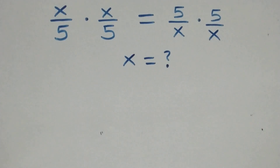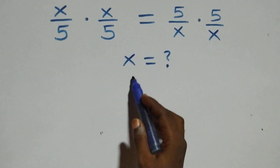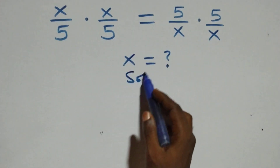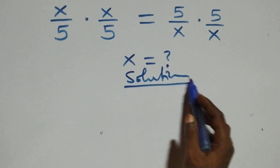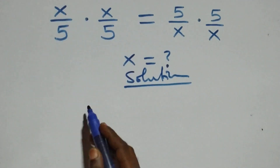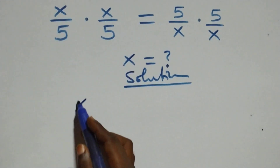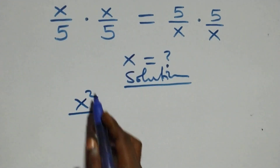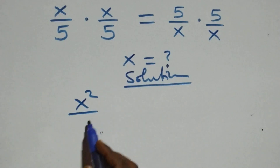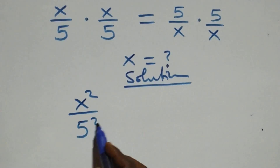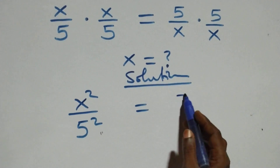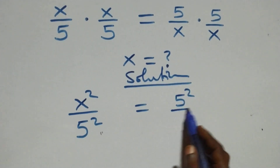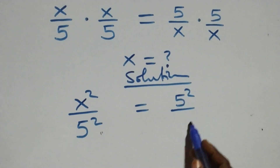Welcome to solve this algebra problem. We can write this as x times x, giving us x squared over 5, times 5, that's 5 squared, equals 5 times 5, which is 5 squared, over x times x, which is x squared.